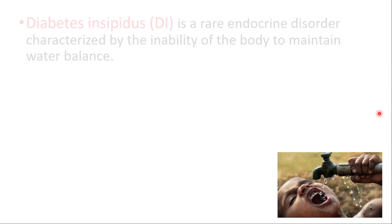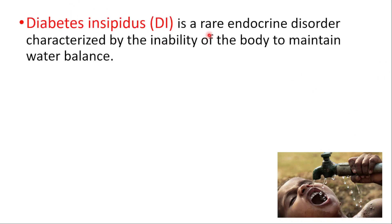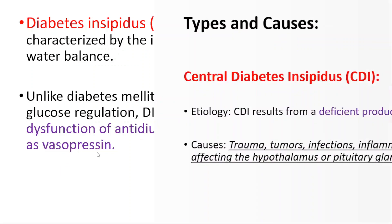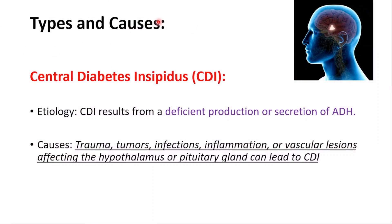Hey everyone, this is Daily Dose of Medicine. In this video we will talk about diabetes insipidus briefly. It's a rare endocrine disorder characterized by the inability of the body to maintain water balance. Unlike diabetes mellitus, which involves insulin and glucose regulation, this condition specifically pertains to the dysfunction of ADH, also known as vasopressin hormone.